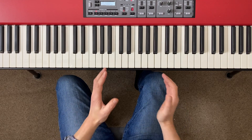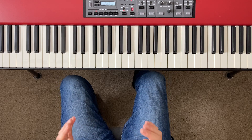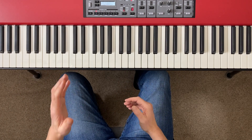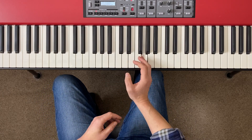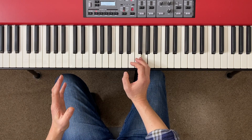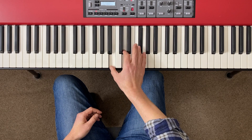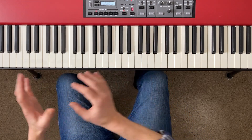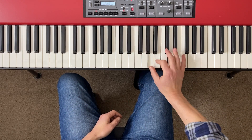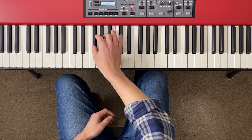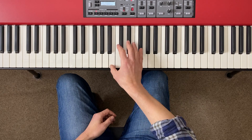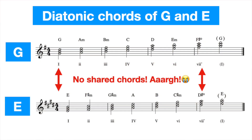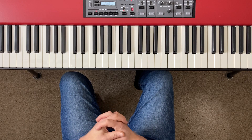Sometimes it's going to be difficult to modulate, and here's an example: when your original key and target key don't share any common chords. Let's say we've just finished playing a song in G major. The diatonic chords of G major are G, A minor, B minor, C, D, E minor, F sharp diminished, back to G. But you want to modulate into E major, whose diatonic chords are E, F sharp minor, G sharp minor, A, B, C sharp minor, D sharp diminished. There are no common chords between the two keys. We could look at using a diminished seventh chord to shift between them, or we can look for chords that aren't identical but are rather similar.